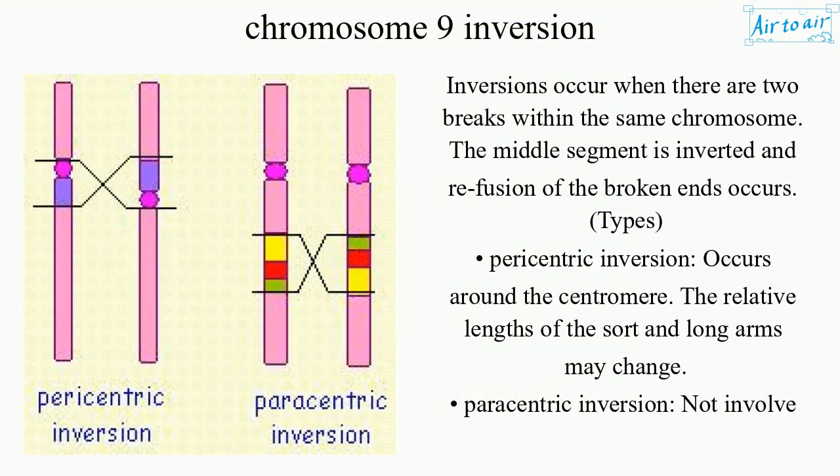Inversions occur when there are two breaks within the same chromosome. The middle segment is inverted and refusion of the broken ends occurs.